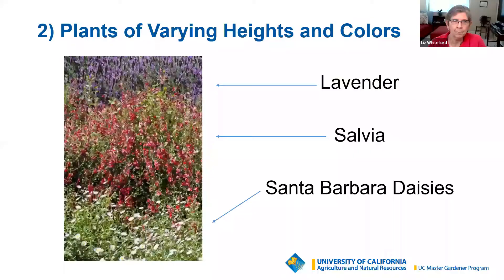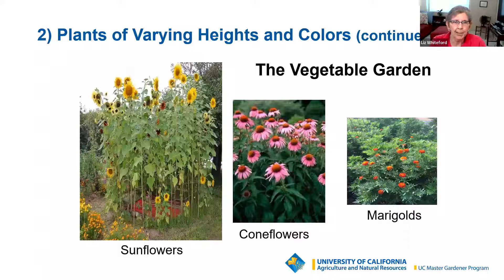You want plants of varying heights and colors. The back is lavender, the middle salvia, and the bottom Santa Barbara daisies. It's not only easier for us to locate the pollinators, but it's easier for them to find what they're interested in if they can see it clearly. Different pollinators like different colors. For those with vegetable gardens, you can transfer that concept: put sunflowers for something tall, mid-height echinacea or cornflower, and marigolds for lower. Don't hesitate to put flowers that will draw pollinators into your vegetable garden.